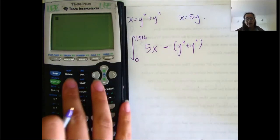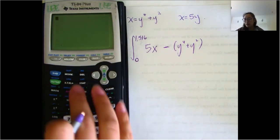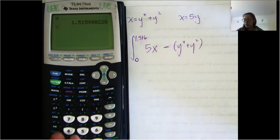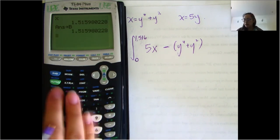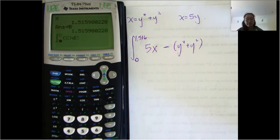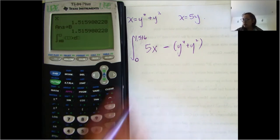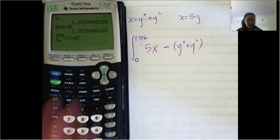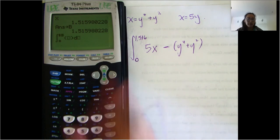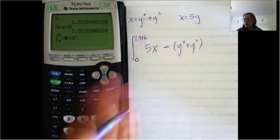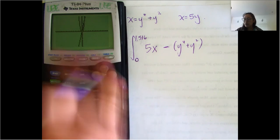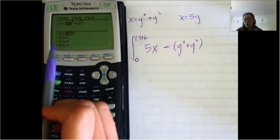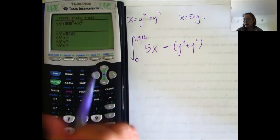So the upper bound is 1.516. On the main screen, store x into some letter — any letter, say B. Then do math 9, which is fnInt, from 0 to alpha B. You can check which functions you put as which — it'll be y2 minus y1.